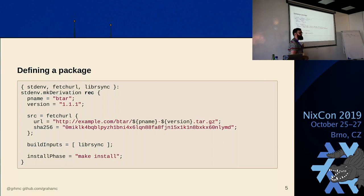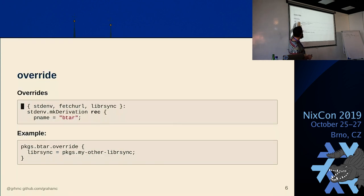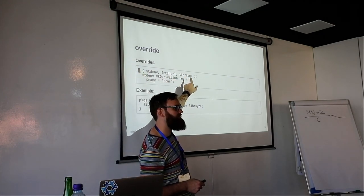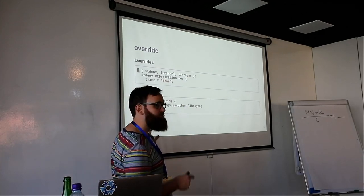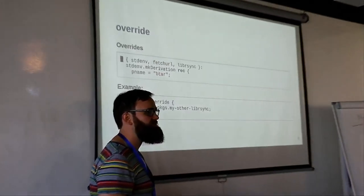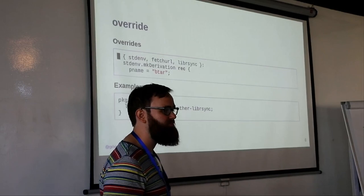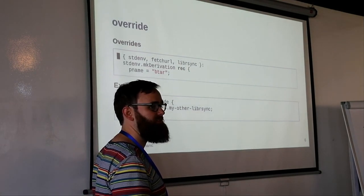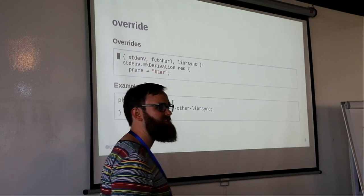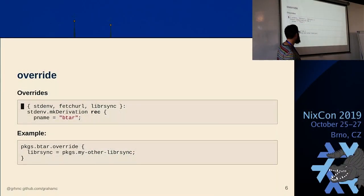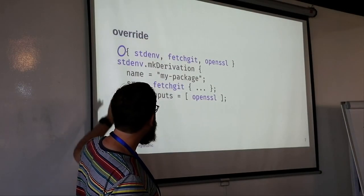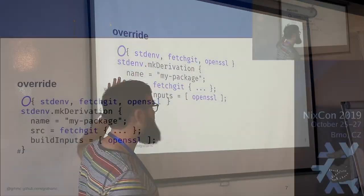Overrides let us change almost everything here. The first one — override — allows us to change these parameters at the very top of the function. In this example, we are working with a package called btar. We are passing a different librsync — maybe a patched version because it had a bug. When we use this `.override` function and pass in our other librsync, when it's called, that librsync will be the one we specified. In blue represents everything that `.override` is able to control.